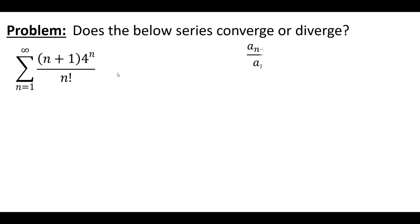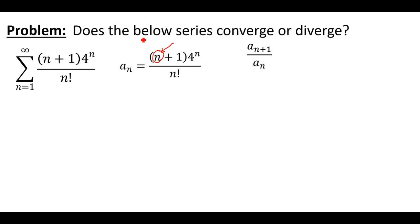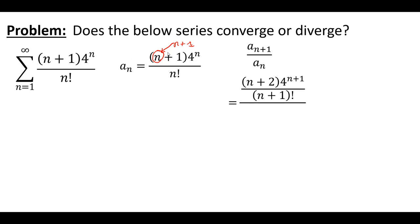Specifically, we're going to figure out A sub N+1 over A sub N. What is A sub N? It's just the sequence term. So let's define A sub N. To find the numerator term A sub N+1, all we need to do is replace all the Ns with N+1. If we do that, we get the numerator with all Ns incremented by one. For the A sub N term on the bottom, we just plug in the expression we already defined. So that's pretty straightforward.